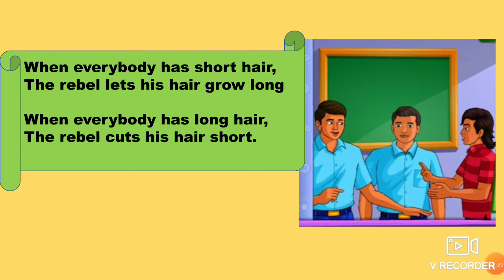When everybody has long hair, the rebel cuts his hair short. So when everybody decides to have long hair, the rebel goes and cuts it short. This is because he wants to gain the attraction of everyone towards him. He wants to be something different from others. This is the characteristic of the rebel.